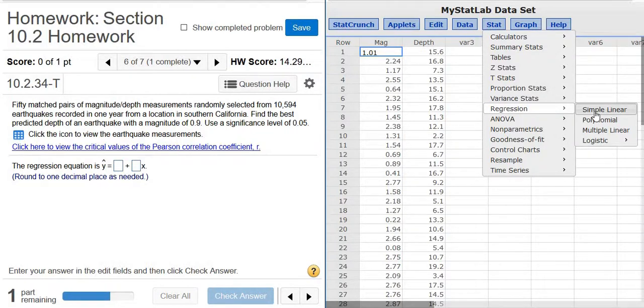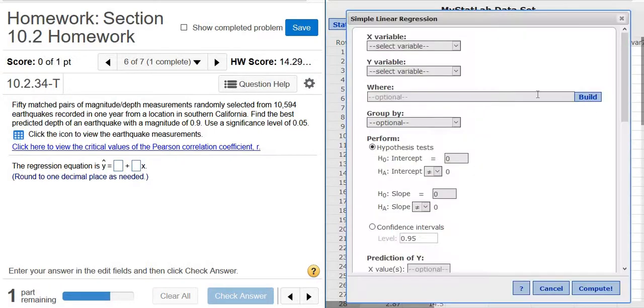Okay, Stat, Regression, Simple Linear. You left click and then just pick the first thing and pick the second thing, okay, that's it.